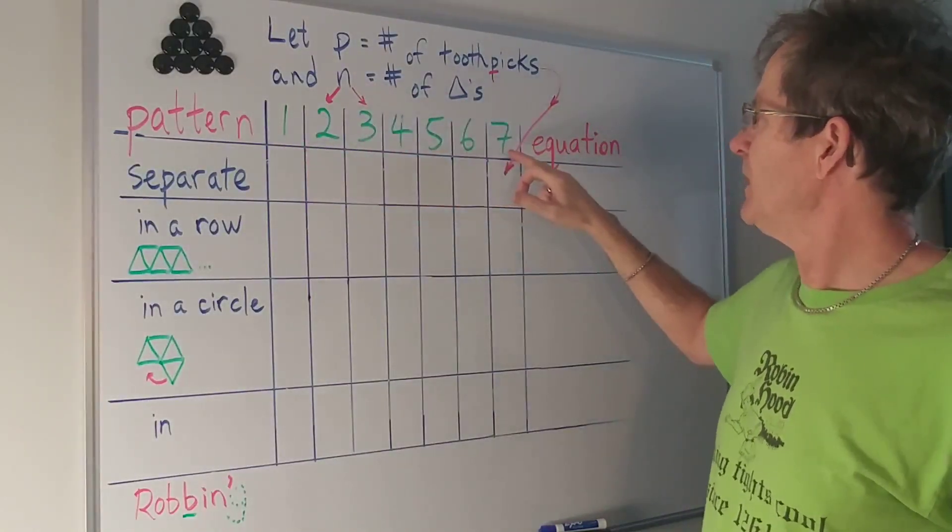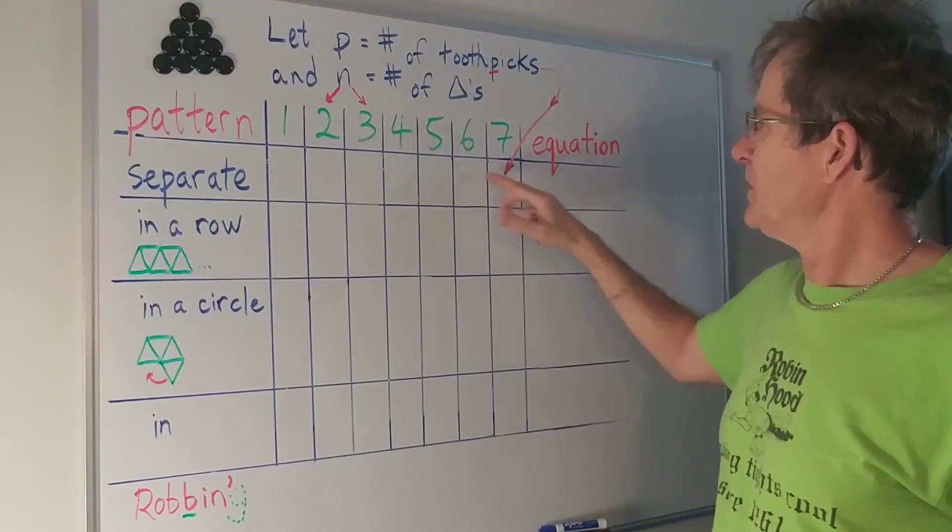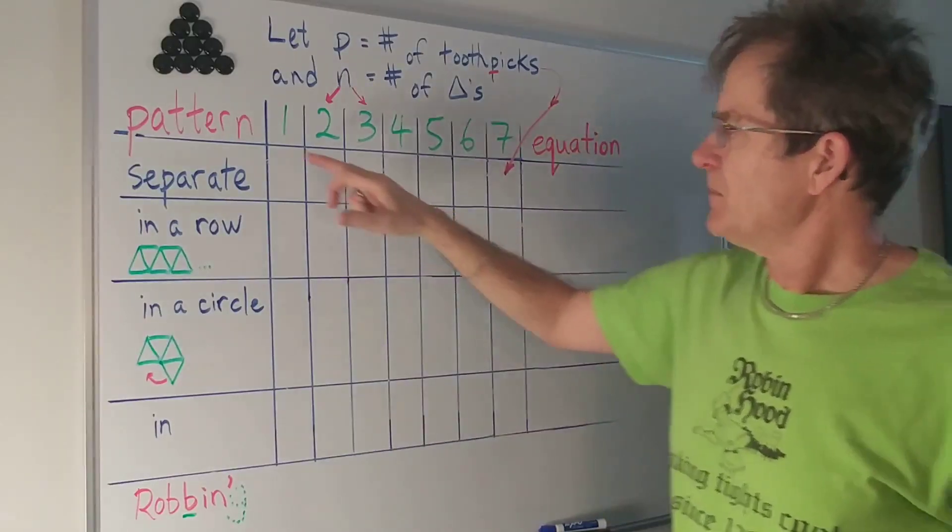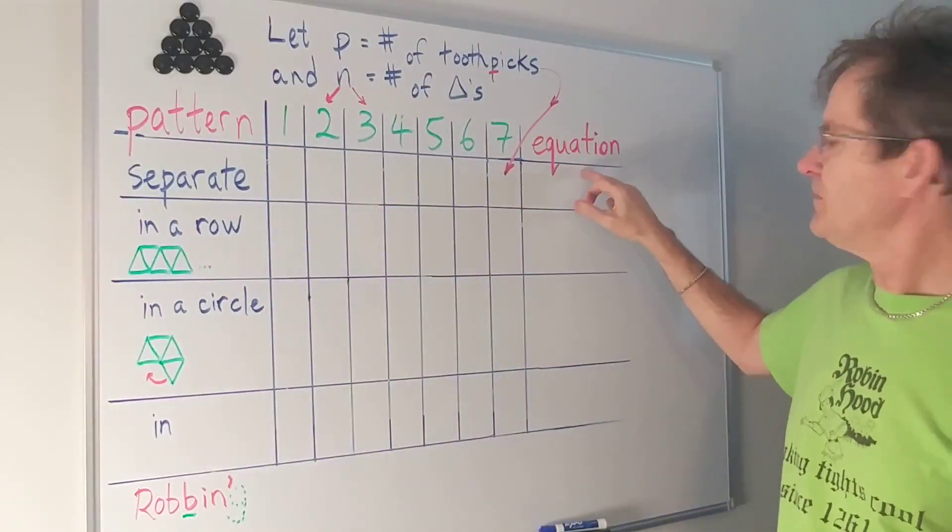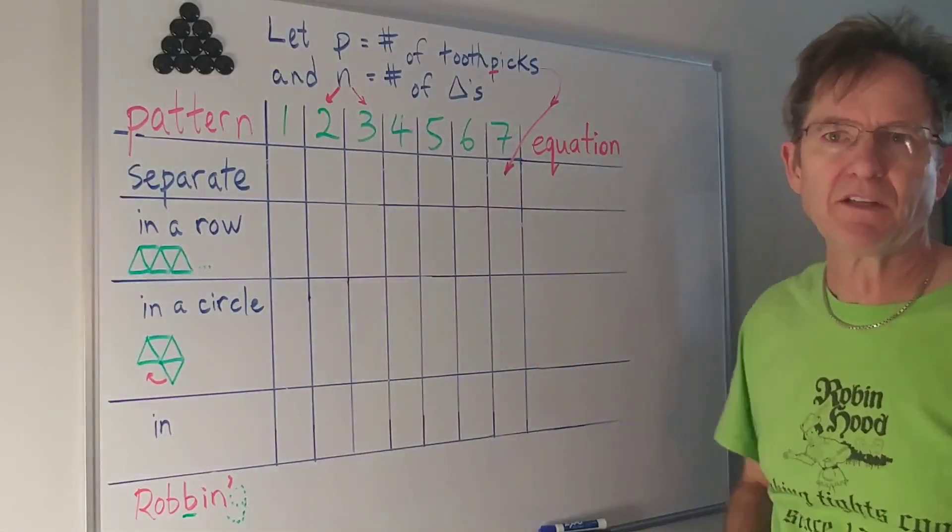These will be the number of triangles we're going to make. The number of toothpicks will be in the table. I'm going to do it in several different patterns and then hopefully come up with an equation if possible to explain the situation.